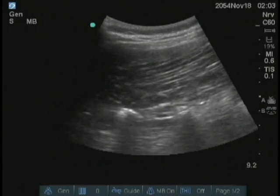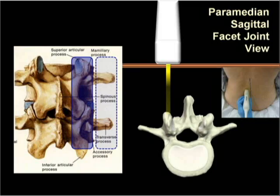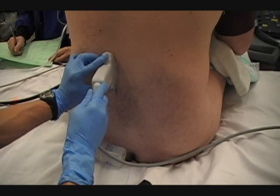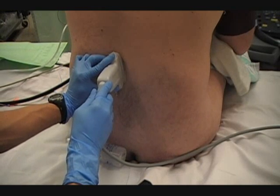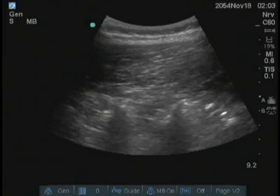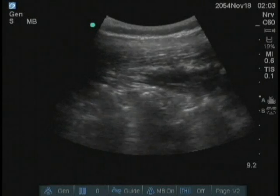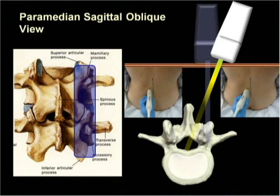From this view, slide the probe medially to lie over the articular processes maintaining a sagittal orientation. The ultrasonographic view changes to show a continuous hyperechoic line of humps, which represent the facet joints between overlapping articular processes. At this point, the probe should not be slid any further, but instead tilted to angle the ultrasound beam towards the midline. This directs the beam onto the lamina and the paramedian interlaminar spaces to obtain the paramedian sagittal oblique view.